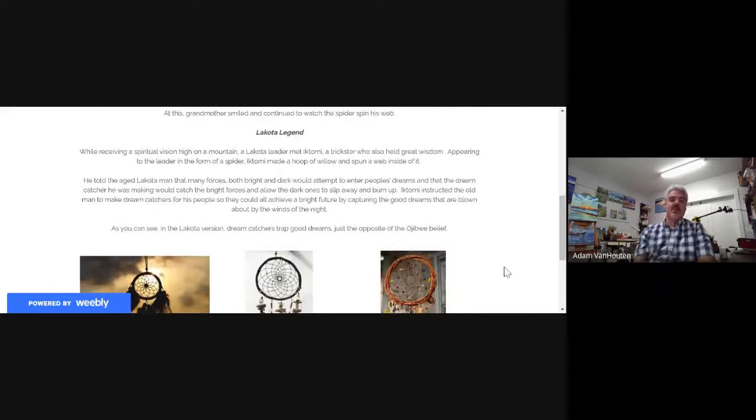Here's a Lakota legend about a dream catcher. While receiving a spiritual vision high in a mountain, a Lakota leader met Ikotami, a trickster who also held great wisdom. Appearing to the leader in the form of a spider, Ikotami made a hoop of willow and spun a web inside of it. He told the aged Lakota man that many forces, both bright and dark, would attempt to enter the people's dreams and that the dream catcher he was making would catch the bright forces and allow the dark ones to slip away and burn up.